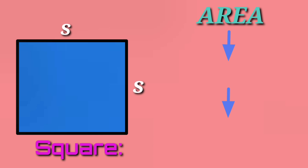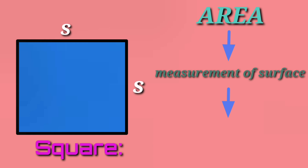The area of the square means the space which is inside the square — jo bhi space square ke andar hota hai — but not its boundary. The formula is side multiplied by side.